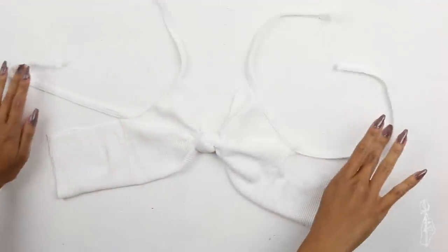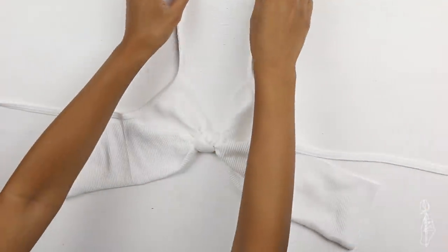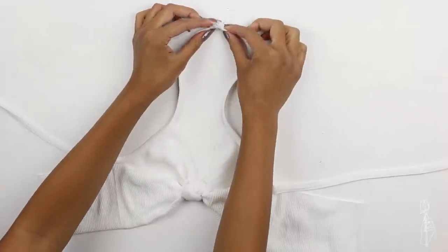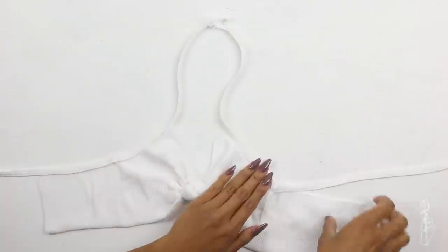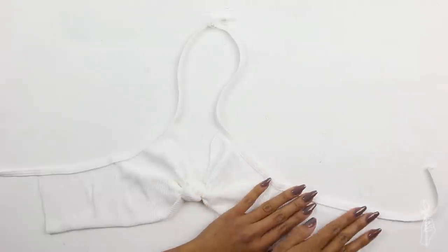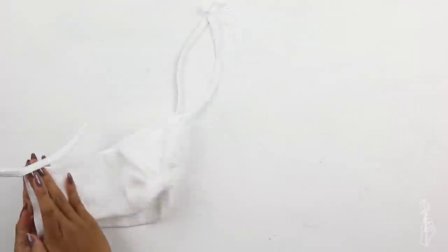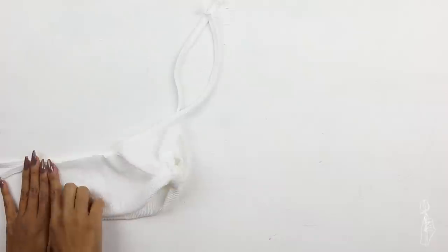Then you want to take the two top straps, sew those together to make a halter strap, and then you're going to take the side straps and sew that down onto the top of the back portion. Once that is done, meet both ends and sew straight stitch down the center back to finish up your bralette.